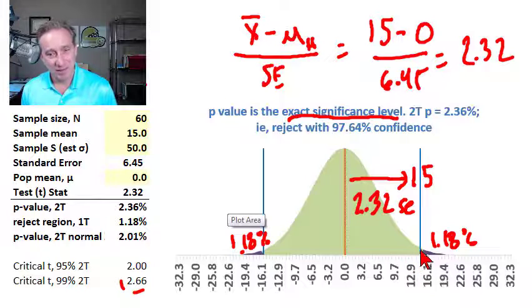but it's possible randomly to get out this far, and at 99% confidence, therefore, we can't reject.